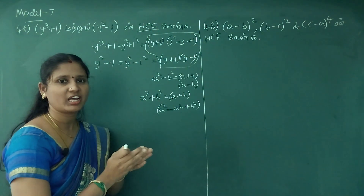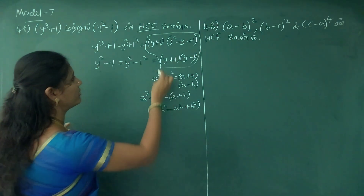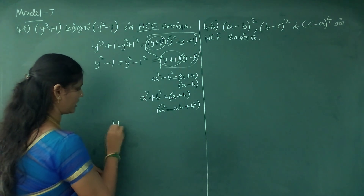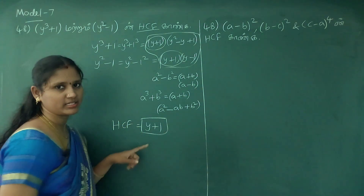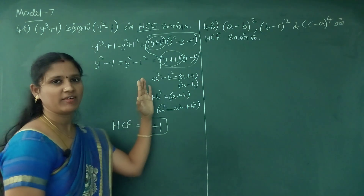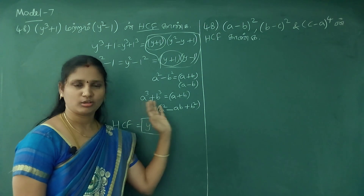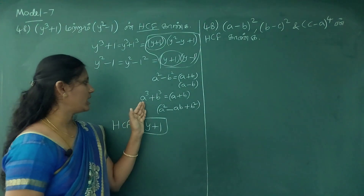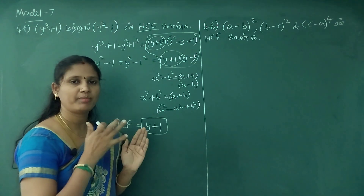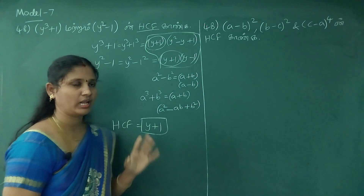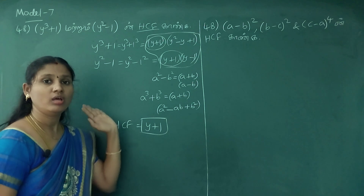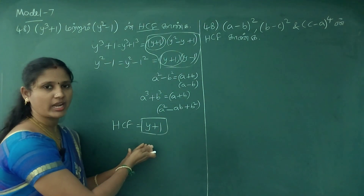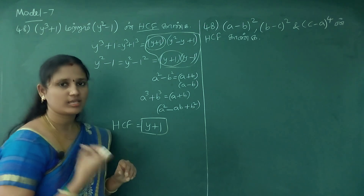HCF. HCF is the common factor. It is y plus 1. Here y plus 1 appears in both expressions — they are the same. So if HCF is the formula, it is y plus 1. We substitute a by y and b by 1, and the two common factors give us the HCF.